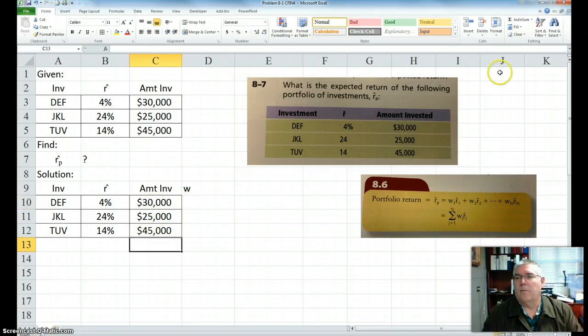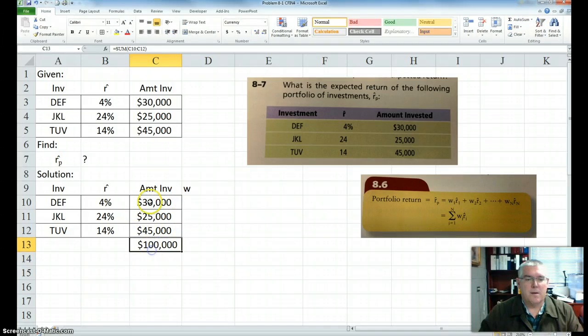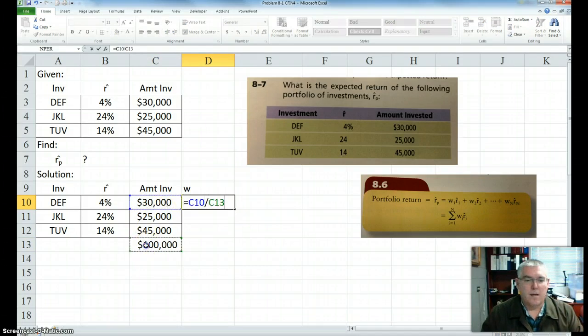So I'm going to hit Auto Sum, and it highlights the ones, is this what you want? Yep, that's what you want. So these sum up to 100,000. So now I can find the proportion is going to be equal to this divided by that.